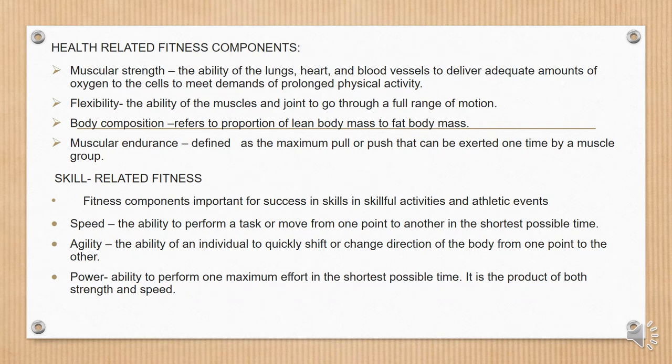Health-related fitness components. Muscular strength — the ability of the lungs, heart, and blood vessels to deliver adequate amounts of oxygen to the cells to meet demands of prolonged physical activity. Flexibility — the ability of the muscles and joints to go through a full range of motion. Body composition — refers to the proportion of lean body mass to fat body mass.